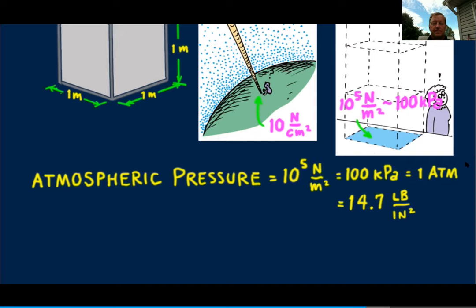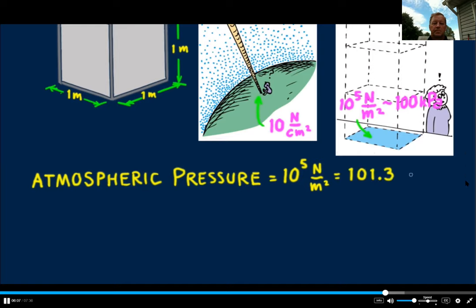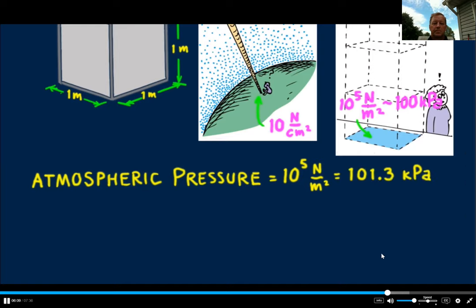So we see that the weight of air bearing down on a one square meter surface at sea level is about 10 to the fifth newtons, producing an atmospheric pressure of 10 to the fifth newtons per square meter. To be more exact, the average atmospheric pressure at sea level is 101.3 kilopascals. We don't feel atmospheric pressure because pressures within our bodies balance it, just as fish deep in the ocean push outward against the huge pressures of seawater. If we remove or reduce these internal pressures, the results can be dramatic.